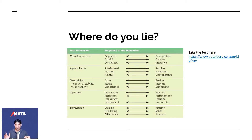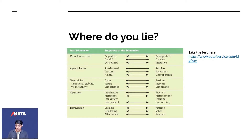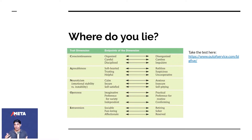You don't need to lie on one end of the spectrum. You could lie somewhere in between. For example, when it comes to conscientiousness — the sub-points being organization, carefulness, and discipline — I am a very disorganized person, but actually a very careful person. I can flip between discipline and impulsive depending on the situation, but in most cases I am a disciplined person. Conscientiousness is about where you generally lie. The endpoints are not about where you lie all the time depending on your mood — it's about how you generally are as a person.